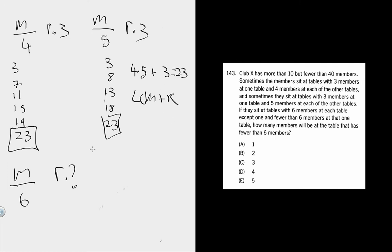So you've got 23 members, and then you want to know what the remainder is when you divide by 6. That's just going to be 5.